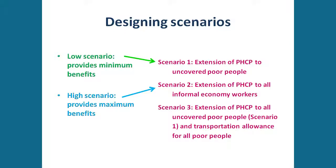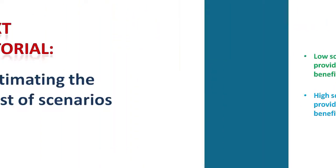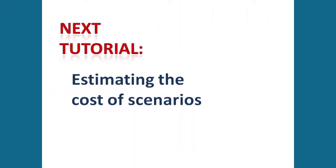A high scenario provides a maximum level of benefits, and is usually the most expensive to implement. In this case, a high scenario could be scenario 2, which extends PHCP to all informal economy workers and their dependents in the country. We have now concluded the tutorial on converting recommendations into scenarios.